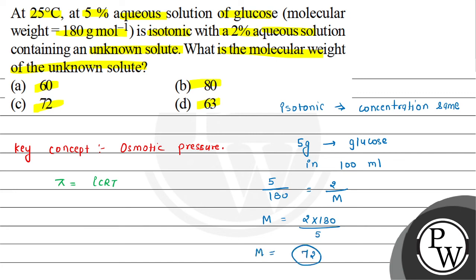So 72 is the molecular weight of the unknown solute, which is option C. Hence option C is the answer. Hope you understood it well. Best of luck and thank you.